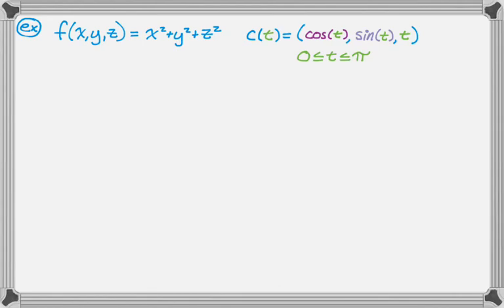So f of x, y, z is x squared plus y squared plus z squared. c of t is given to us and that's pretty nice. So it's cosine of t, sine of t, t, and then we're going from 0 to pi. So we actually know everything that we need and we can kind of just jump in and do the problem.